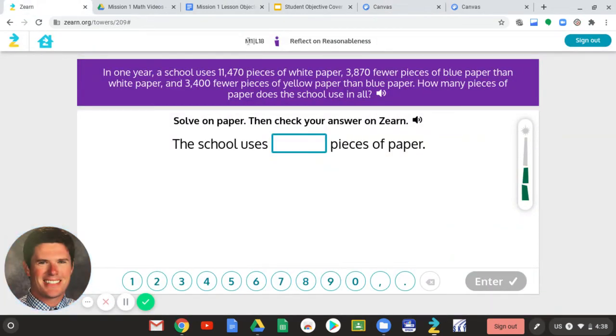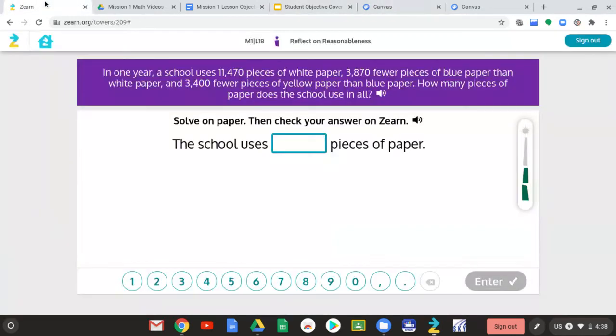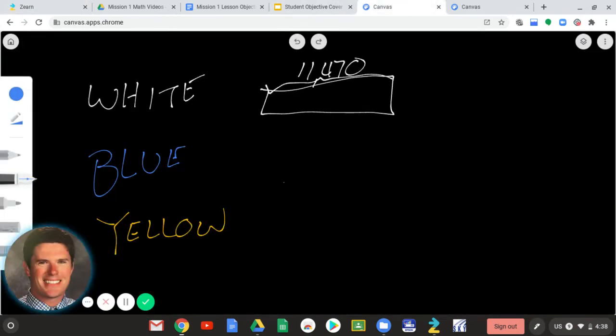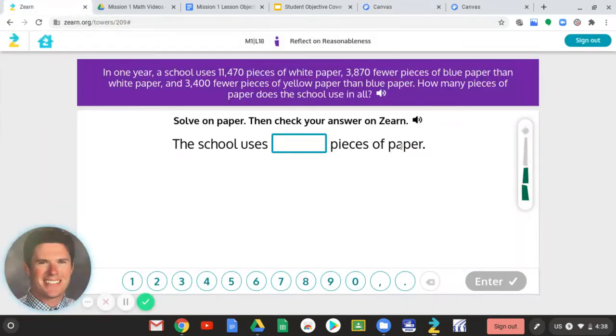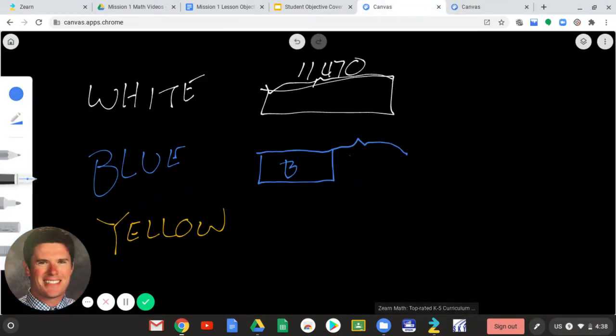And if we look at the blue paper, it says there's 3,870 fewer pieces of blue paper than white paper. So, let's draw that. So, 3,870 fewer pieces of blue than white. So, for that blue, I don't know what it is. But I do know it is 3,870 less. So, what does that tell us? That means that those two together would be 11,470 because that was the total of the white.